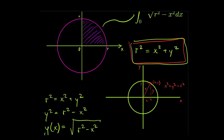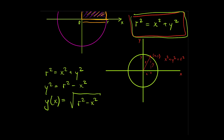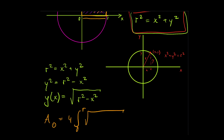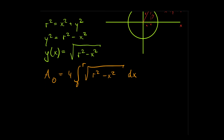To find the area of the circle we integrate this function from 0 to r, which gives us a quarter of the total area. So the area of a circle is 4 times the integral from 0 to r of the square root of r squared minus x squared dx. All we have to do now is solve this integral and we will get the area of a circle.